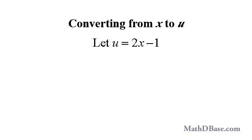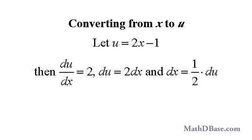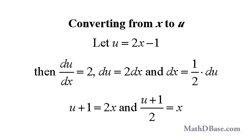If we let u equal the quantity 2x minus 1, then du dx will be 2, then separating differentials, du will be 2 dx, and dx will be half times du. Rearranging the terms of the substitution, u plus 1 equals 2x, and the quantity u plus 1 divided by 2 equals x.